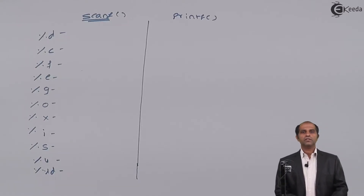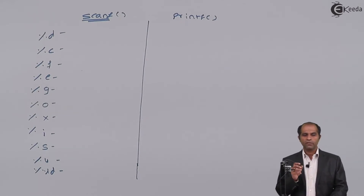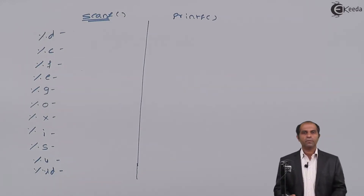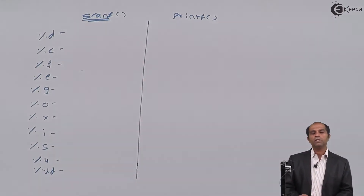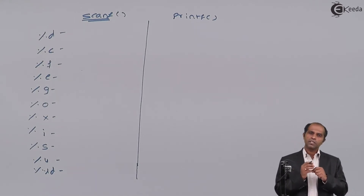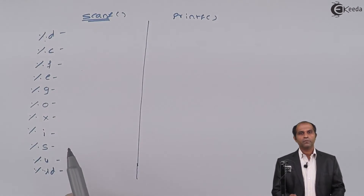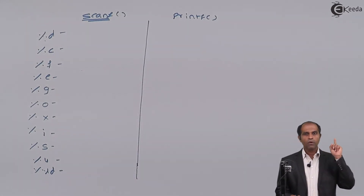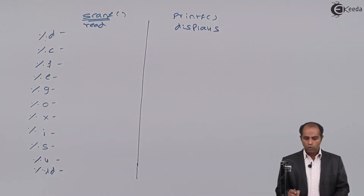Let's look at the various format specifiers which you can use with scanf and printf. scanf can read any type of value and printf can display any type of value. I have a list of specifiers used with scanf and printf. We'll first discuss the specifiers used with scanf and then go ahead with printf. Some specifiers might do the same task but with a minute difference. Whenever I say scanf, remember it will always read a value, and printf always displays a value.